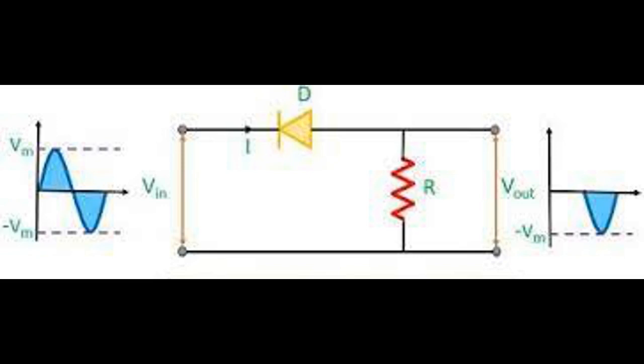During the positive half cycle of the input waveform, the diode D is reversed biased which causes the positive half cycle to be clipped off.